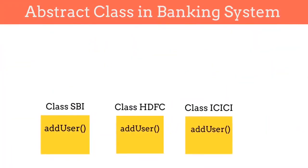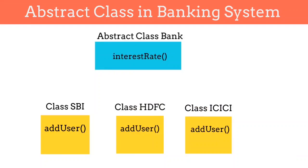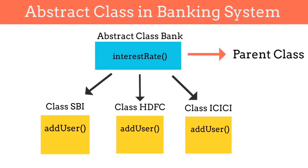Coming back to our problem — the banking system. We want to force all the developers to implement some method in all the classes, so we can use abstract class here. We will create an abstract class called Bank which has the abstract method rate of interest, and all the classes like SBI and HDFC will inherit this Bank class. Now the Bank class, which is an abstract class, will act as a parent class for SBI, HDFC, and other classes. It is mandatory for these classes to redefine the abstract method in their body, otherwise they will get a compile time error. So all the methods we want to force all the classes to implement will be listed in the abstract class, and even if a developer forgets to implement a method, they will get a compile time error.